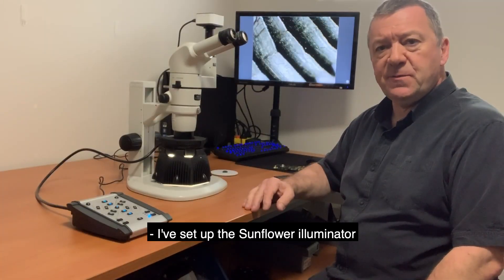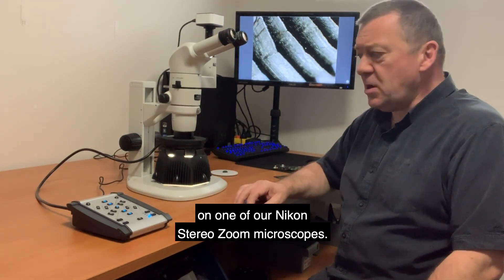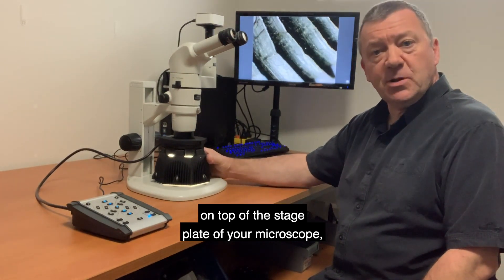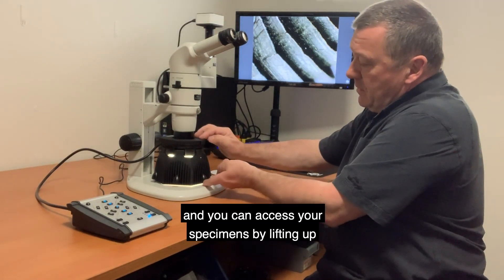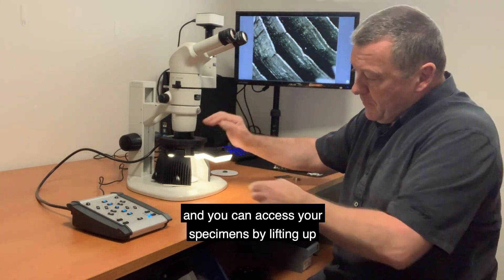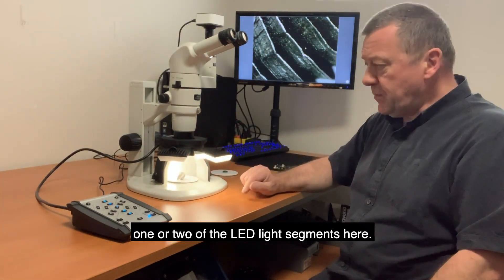I've set up the Sunflower illuminator on one of our Nikon Stereo Zoom microscopes. This is simply placed on top of the stage plate of your microscope, and you can access your specimens by lifting up one or two of the LED light segments.